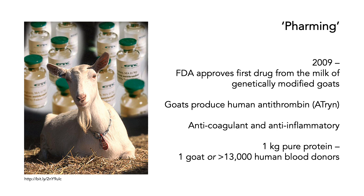Here's the conundrum. In order to get one kilogram of pure protein of antithrombin, you can either milk one single goat or you can collect it from 13,000 human blood donors. The challenge with that is that some proportion of those individuals might have diseases, making it very hard to ensure the supply from human blood donors is both reliable and safe.